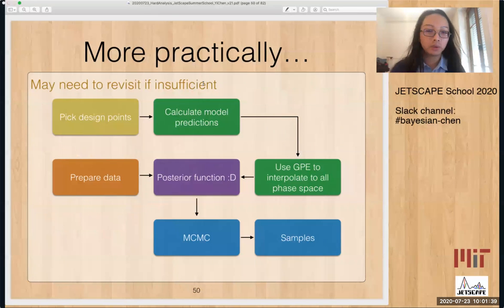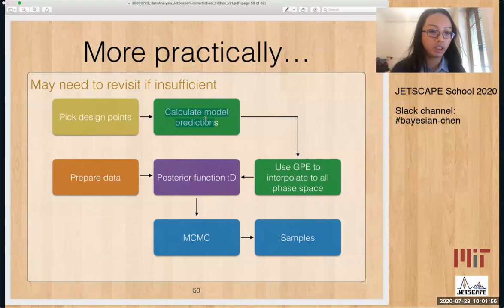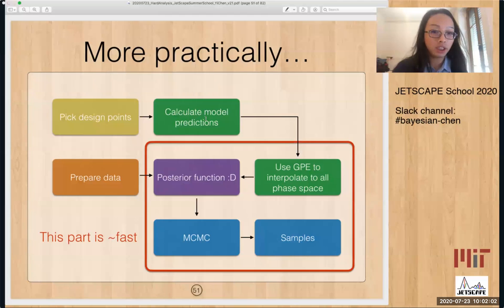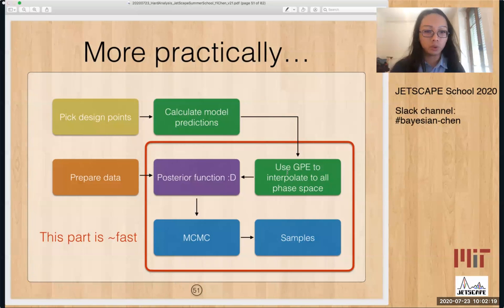There are also cases where you set everything up, do an analysis, and then discover that the design points are not sufficient and the results are not stable. In that case, we may need to go back, take more design points, calculate more predictions, and rerun things. The good news is that once you get the inputs set up, this part is relatively fast — usually around 10 to 15 minutes, or maybe a couple of hours. So we can play with these things very easily.